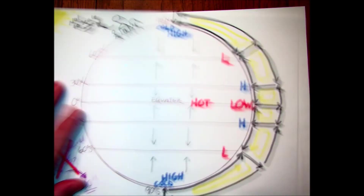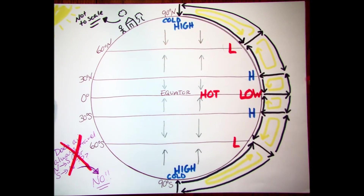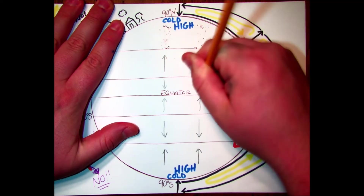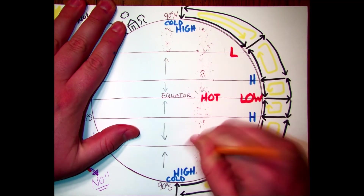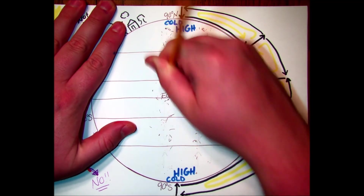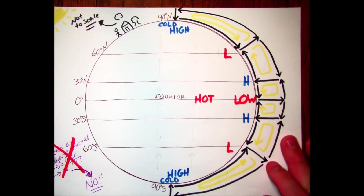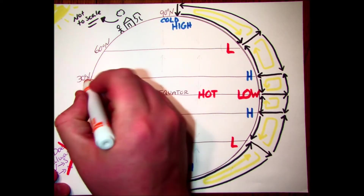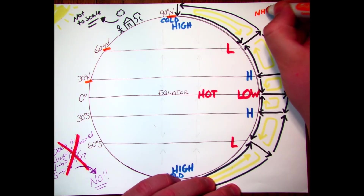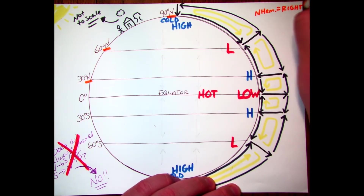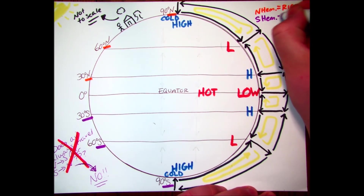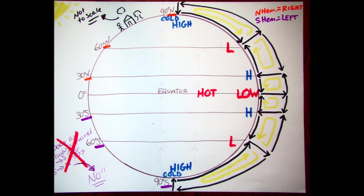Going back to our picture of the Earth and those north-to-south and south-to-north air currents — notice I'm erasing them — because we know air gets deflected to the right or to the left depending on what hemisphere it's in. In the north, air gets deflected to the right; in the south, it gets deflected to the left.